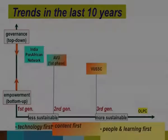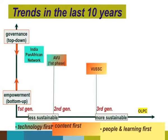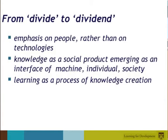The third generation in the last 10 years is the Virtual University. We've learned from those experiences and started with a bottom-up approach, putting the people and the learning first. It's still only about four or five years old, so it's too early to gauge the full impact, but we hope this will be a more sustainable model which will help us convert the divide into a dividend. We must place the emphasis on people rather than on technologies. We can look at knowledge as a social product which emerges as an interface between the machine, the individual, and society — and learning as a process of knowledge creation, so there is an interchange between the production and consumption of knowledge.